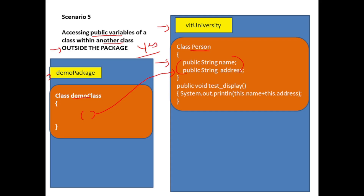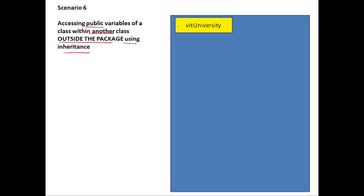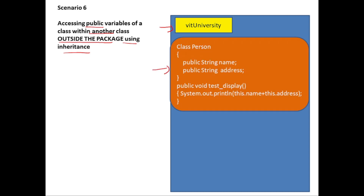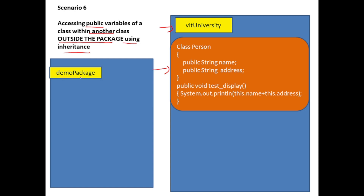Now let's take a look at scenario six: accessing public variables of a class within another class that's present outside the package, using inheritance. We have the VIT University package with class Person. We have a default package with a class Employee that extends class Person. So we have a class outside the package inheriting class Person. The question is: can I access the public data members of Person within the methods of Employee? Employee is the child class, Person is the parent class, and these two classes are in two different packages. The answer is yes.